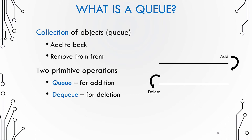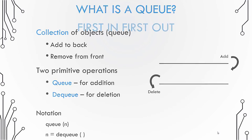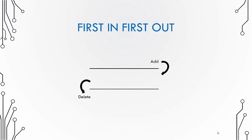There are two primitive operations in a queue: addition, which is called enqueue, and deletion, which is called dequeue. To enqueue, you pass the object to be added to the back of the queue. Dequeue removes an object from the front and usually returns it. A queue is a first in first out data structure — the object added first will be the one to go out first.